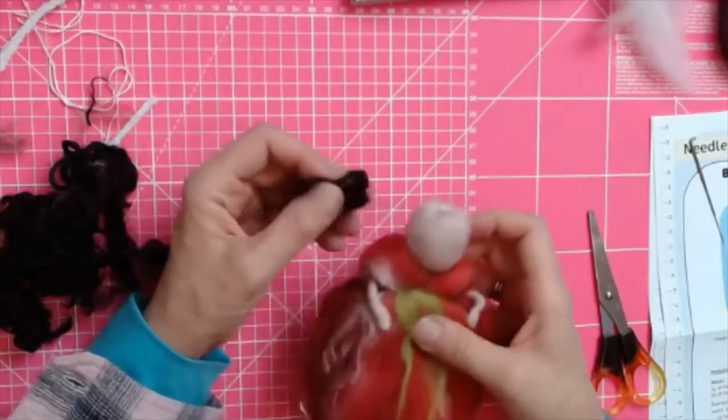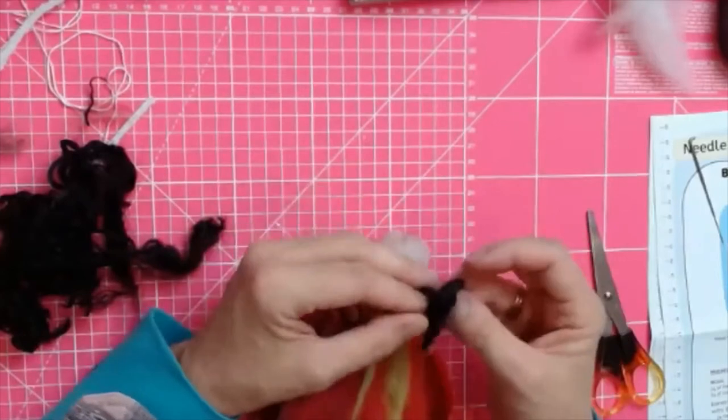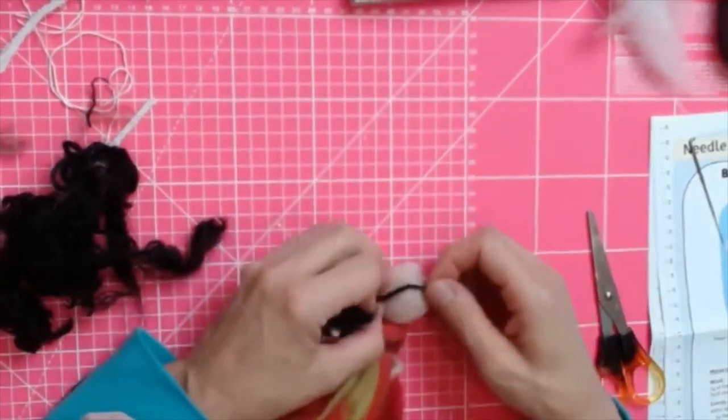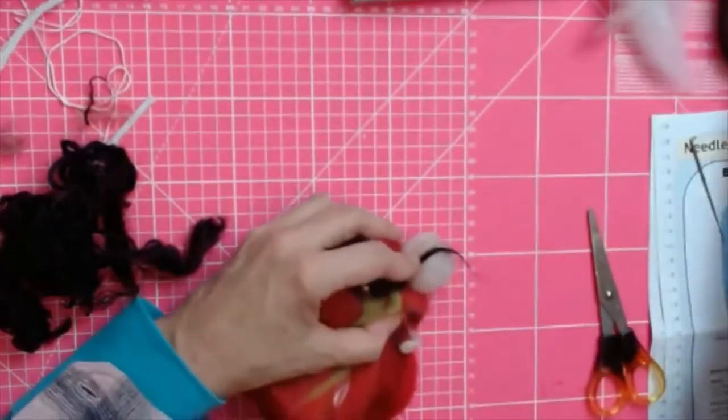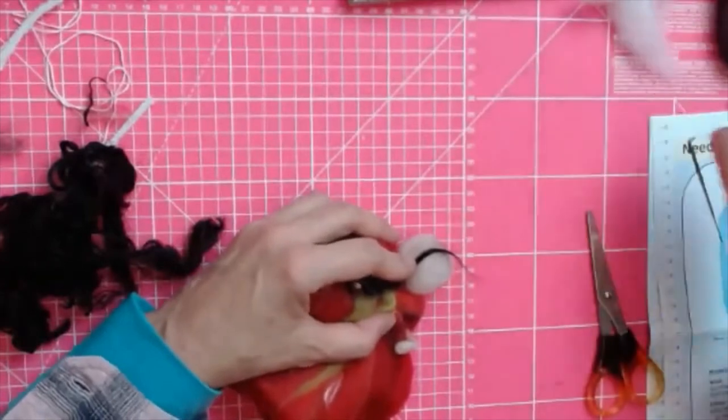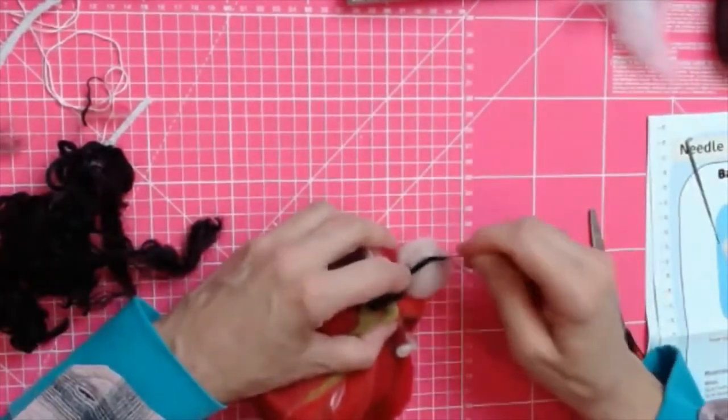When you're needle felting curls onto a figure, what can happen is if you've got a tightly wispy curl here and you use a relatively fine needle, they might just not attach and it looks like they just come off again.